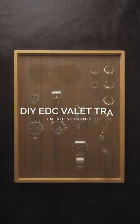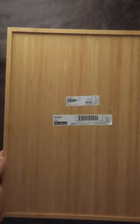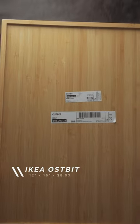This is how to make your very own valet tray in just a few minutes for less than $15. First you need a wooden tray such as this bamboo ospit from Ikea.